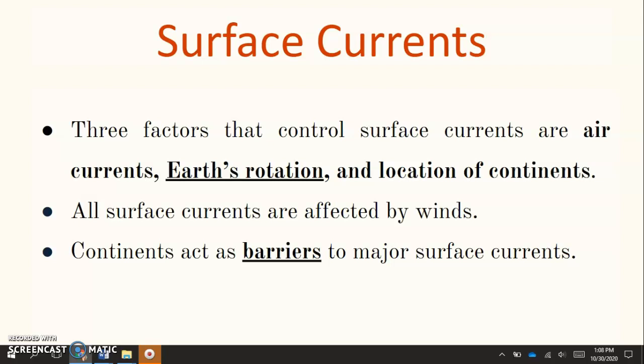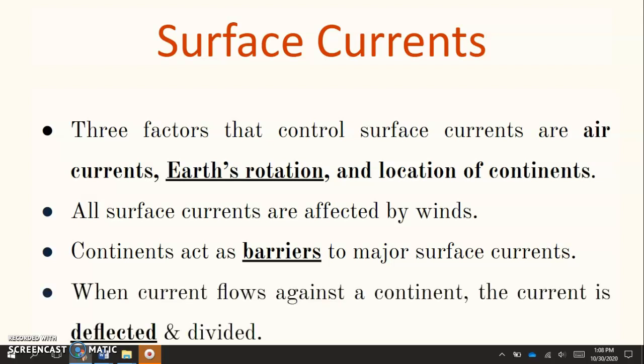So if you think of flowing water, if it hits the land and it hits the shore it's going to be redirected because it can't keep flowing through the land that it's meeting. So when current flows against a continent the current is deflected and it's also divided so it dissipates and it moves in opposite directions once it hits the land.